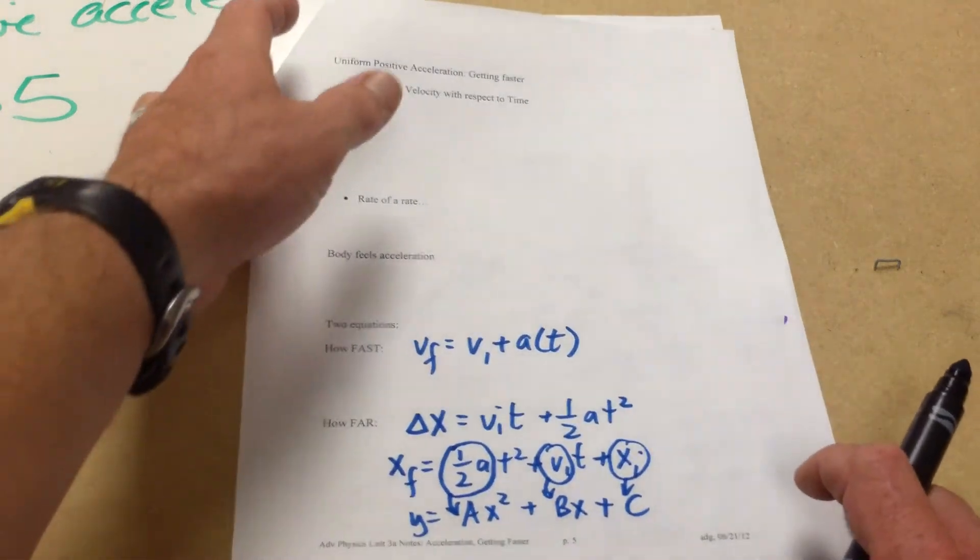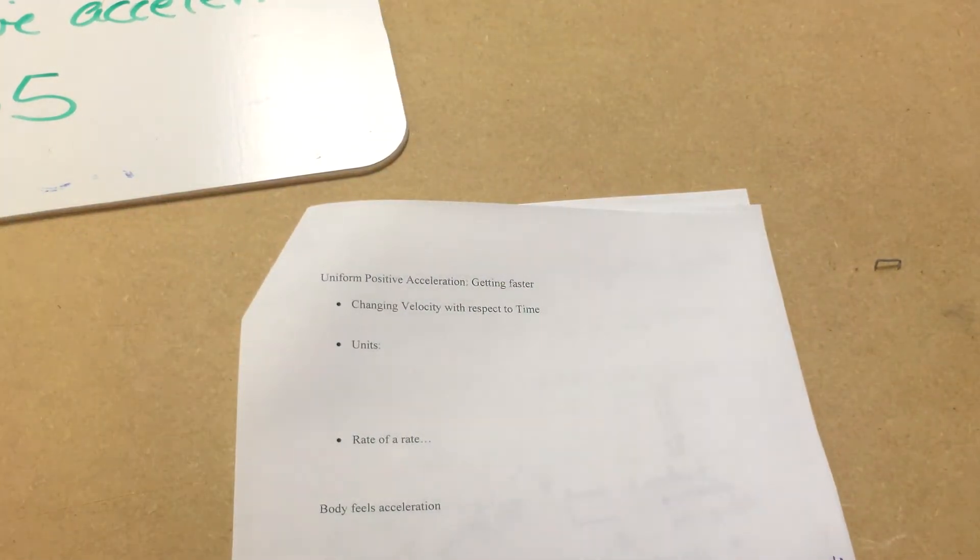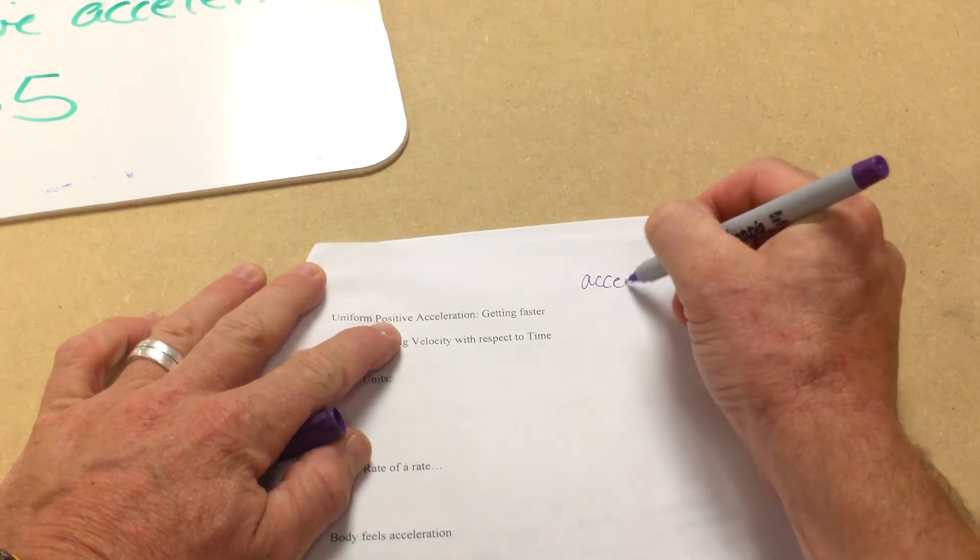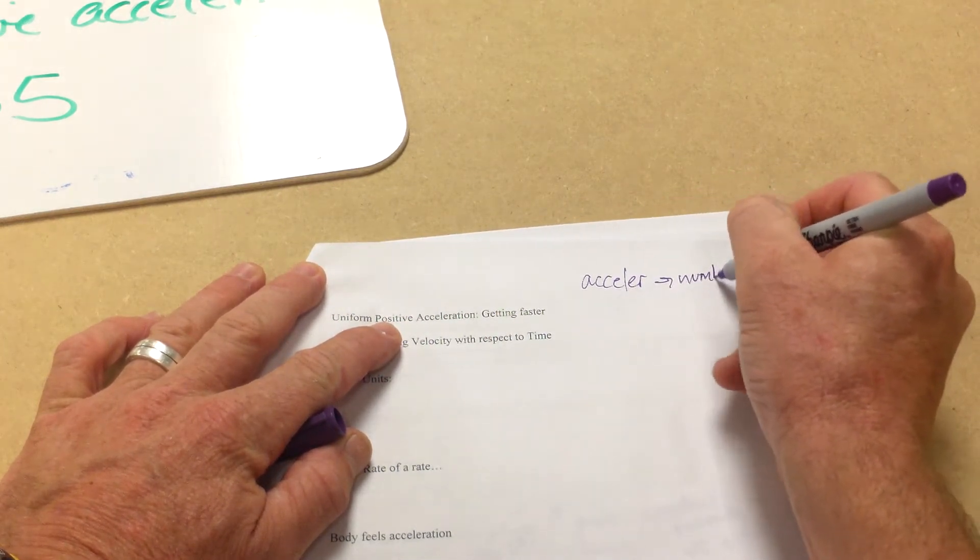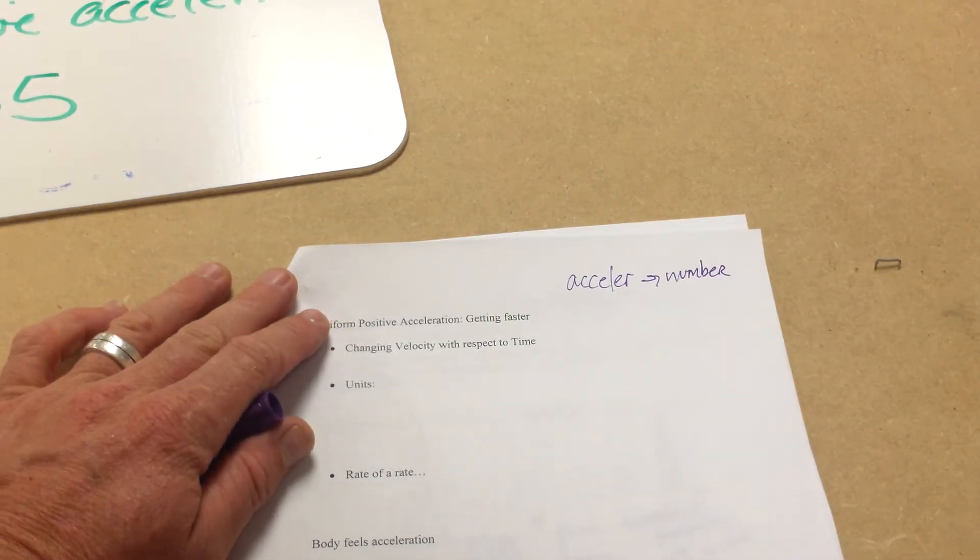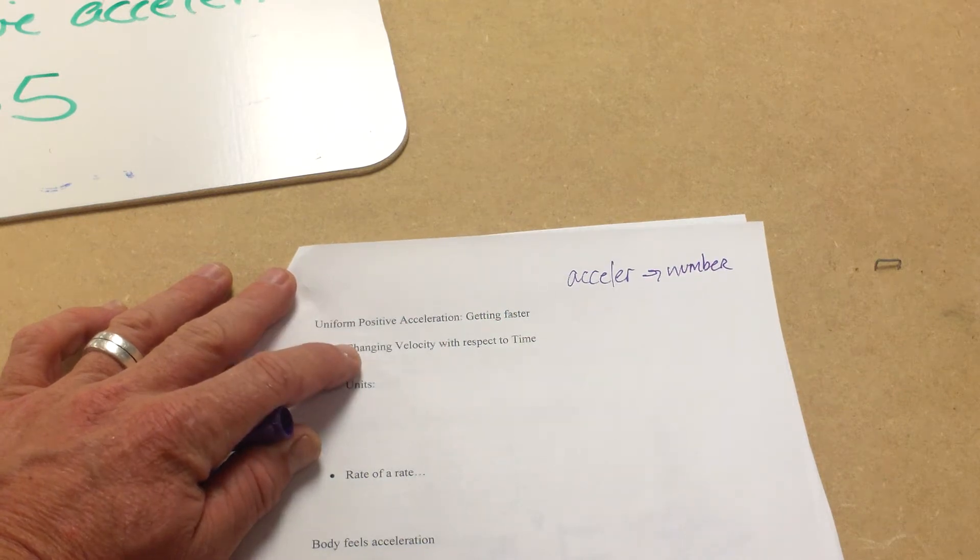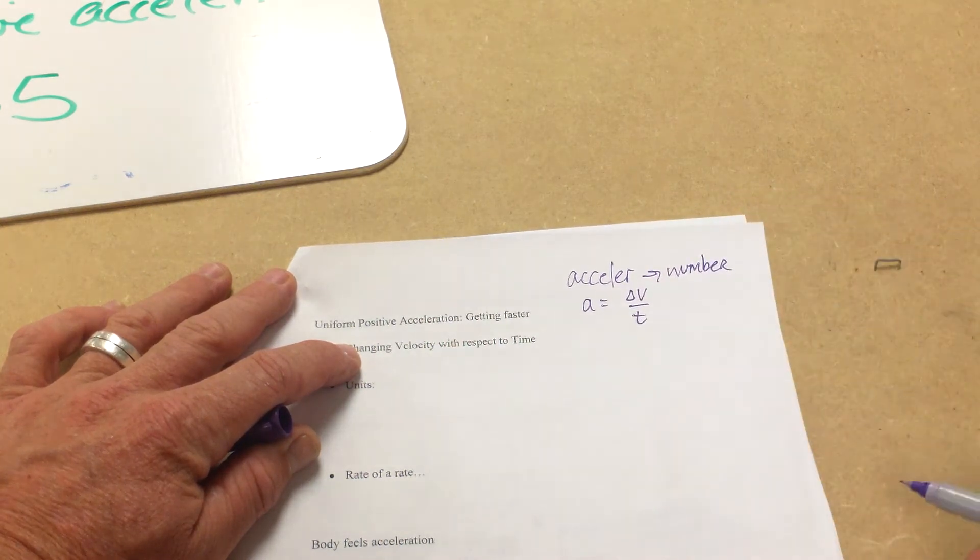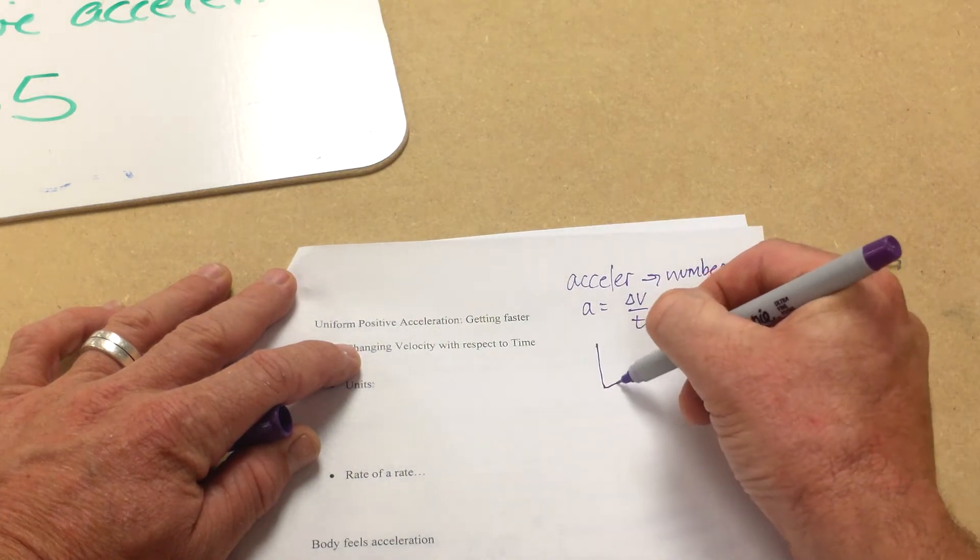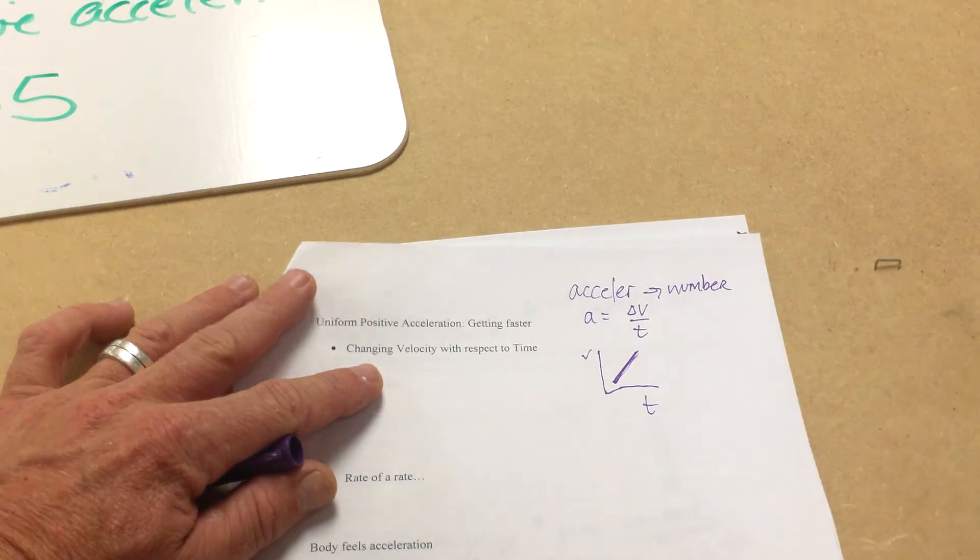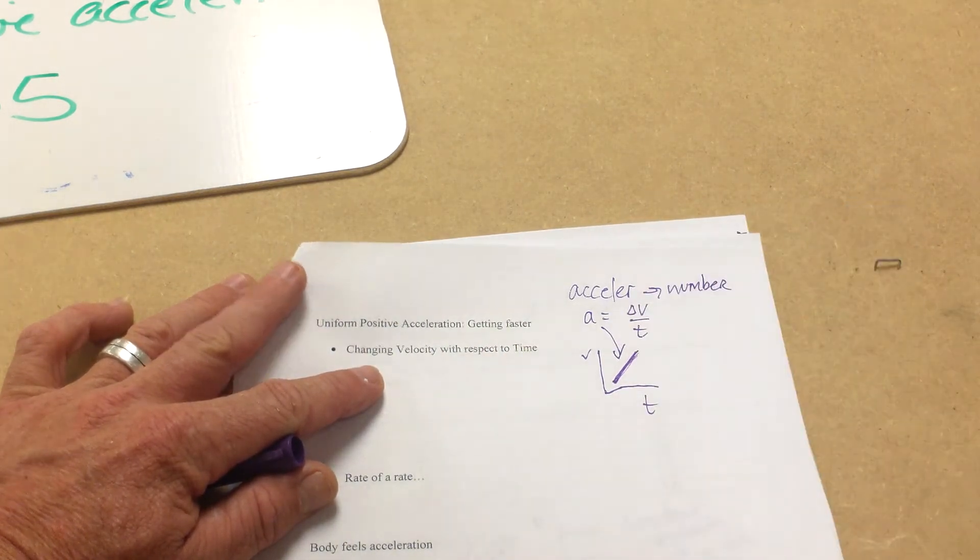So let's start up at the top here. What exactly is acceleration? Acceleration really then is a number. It's basically a number that says how is our velocity changing. We're changing velocity with respect to time. Acceleration then can be found as a slope, the slope of a velocity time graph. So we have a slope here. This slope here is the acceleration.